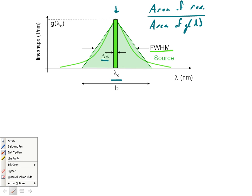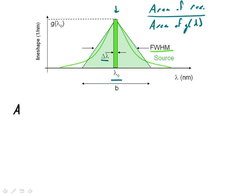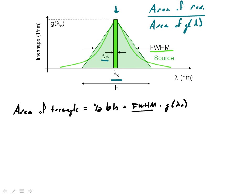Our problem becomes calculating the area of the rectangle compared to the area of the triangle. The area of a triangle is one-half base times height, which is essentially one-half times the full width at half maximum times g of lambda-naught. We assume the full width at half maximum is given, so we need to calculate g, the line shape function, at the peak. Since the area of the triangle equals 1 by definition of line shape, the line shape at the peak is 1 over the full width at half maximum. With the full width at half maximum given in nanometers, the units of line shape are nanometers to the minus 1.